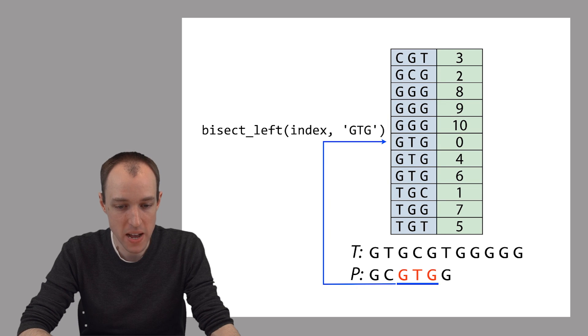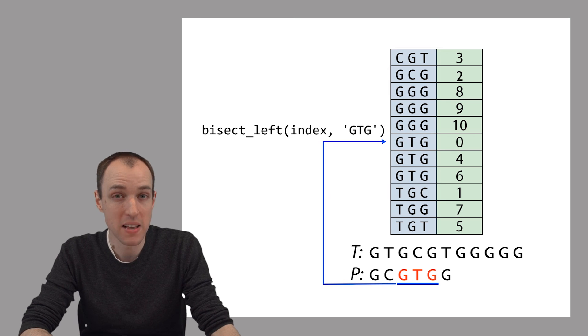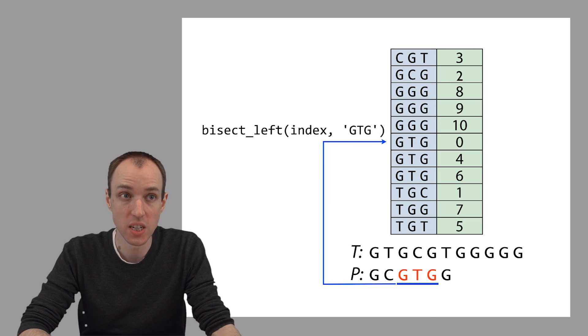So this bisect_left function is exactly what we need to do queries of this index data structure that we've built. For example, if we're querying with this pattern and we take the 3mer GTG, we can use bisect_left on our index with the parameter GTG. It will return the offset of the first position where we could insert GTG while maintaining sorted order. And that corresponds to this entry right here, which is the first entry that has GTG as its key.